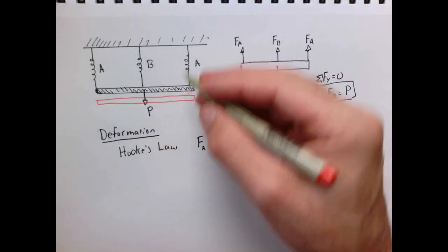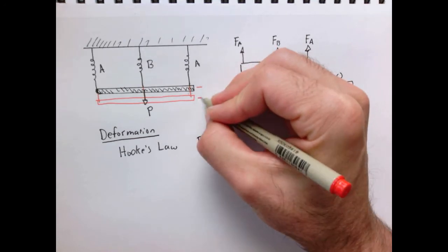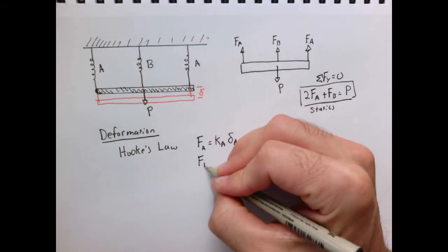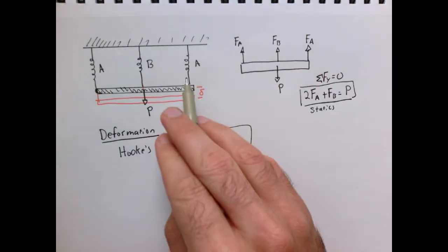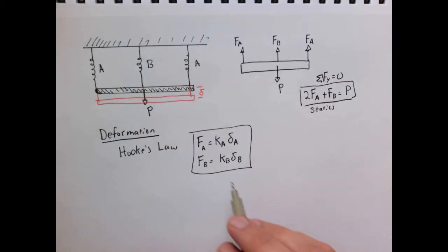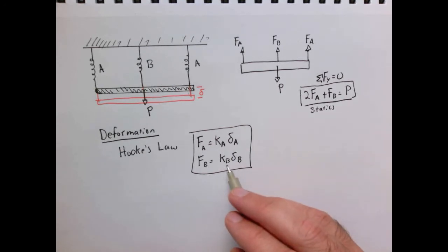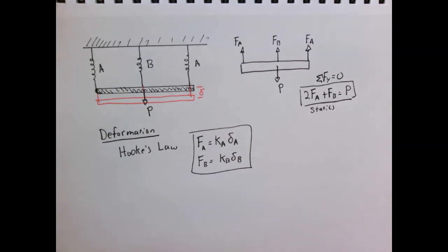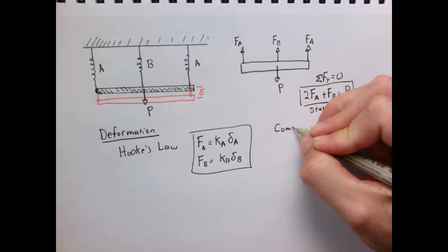For two linear springs, we have spring laws for springs A and B following the same form, but with potentially different spring constants k_A and k_B — one can be stiffer than the other. That gives us two relationships: statics and deformation. The last relationship we need is called compatibility. In this case, since the plate moves down uniformly and the two outer forces are the same, the displacement of spring A equals the displacement of spring B. So those two displacements are not independent — they must be equal.